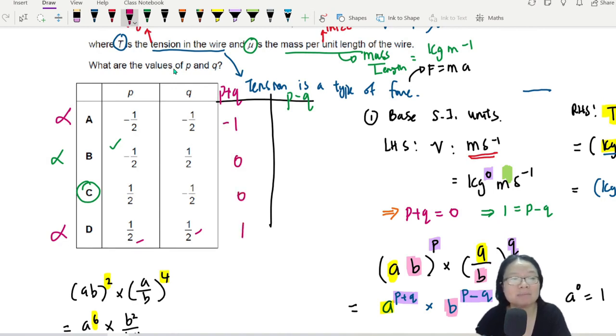P minus Q is 1. In this case, P minus Q is negative 1. This is out already. This one, P minus Q is negative half. Actually, I don't have to test this too already. Negative half minus half. Minus half is negative 1. So this is out. And for this one, half minus negative half, this is 1. So the answer is C. So yes, physics is very math intensive now.